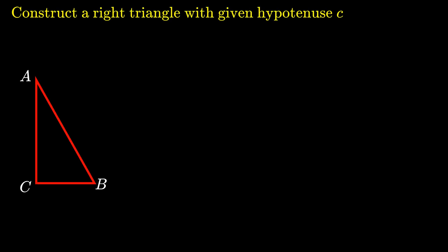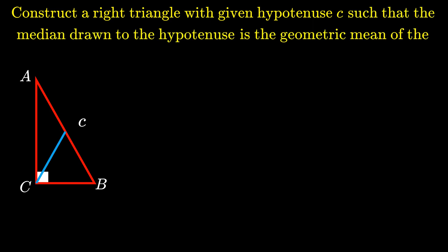We are going to construct a right-angled triangle with hypotenuse C such that the median drawn to the hypotenuse is the geometric mean of the two legs of the triangle.